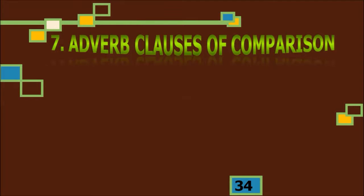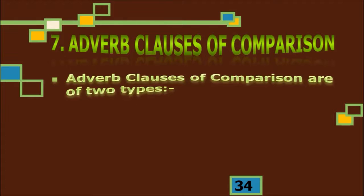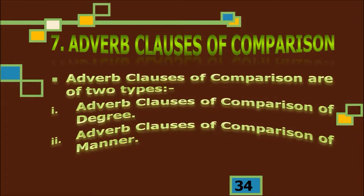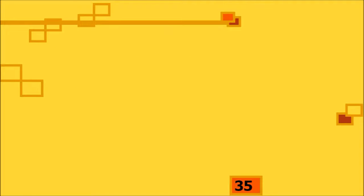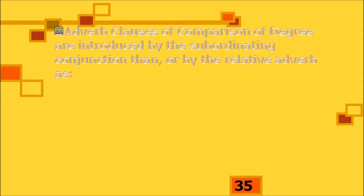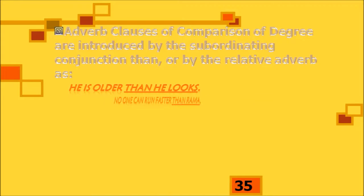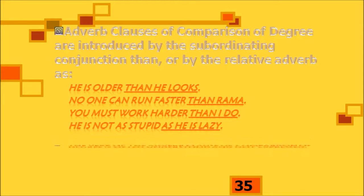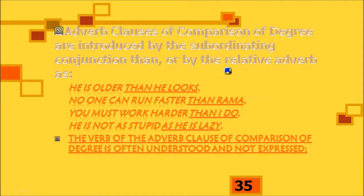Adverb clauses of comparison have two types: comparison of degree and comparison of manner. Adverb clauses of comparison of degree are introduced by the subordinating conjunction 'than' or the relative adverb 'as.' Examples: 'He is older than he looks'; 'No one can run faster than Rama'; 'You must work harder than I do'; 'He is not as stupid as he is lazy.' The comparisons are quite vivid here.